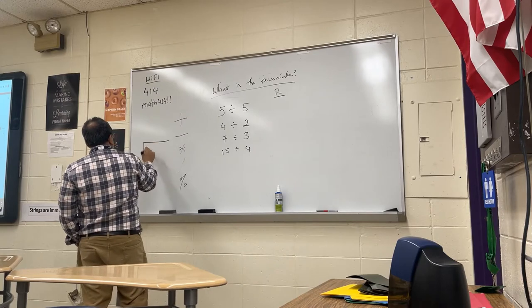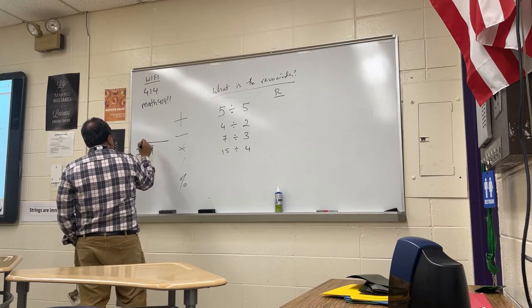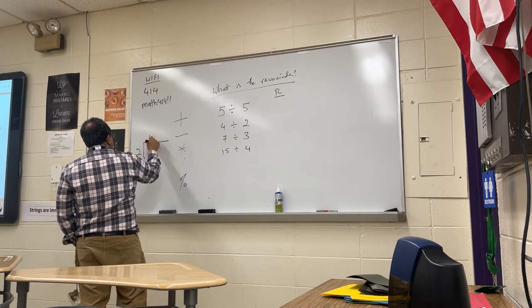We'll start off with some simple ones and I'll show you that it can get tricky pretty quickly. So, what would be the remainder if I go 5 divided by 5? How about 4 divided by 2? How about 7 divided by 3? How about 15 divided by 4? Let me just go back to this example here for a second. So I had 9 divided by 2. That would be 4, remainder 1.